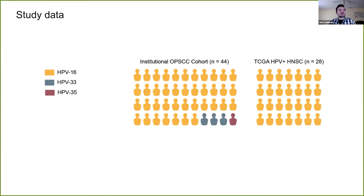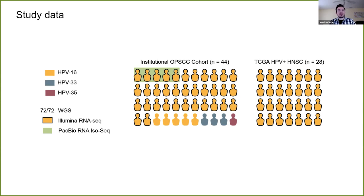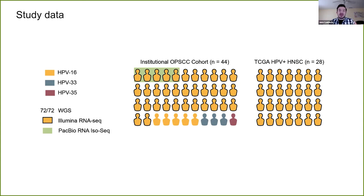In our study we're looking at a cohort of 72 patients with HPV-mediated oropharyngeal cancer, where we can categorize the different HPV strains — HPV-16 being dominant. We also have Illumina RNA-seq data for the majority of samples, as well as PacBio RNA IsoSeq, which is a long-read RNA sequencing technology providing much longer reads than short Illumina reads — available for a minority of patients.